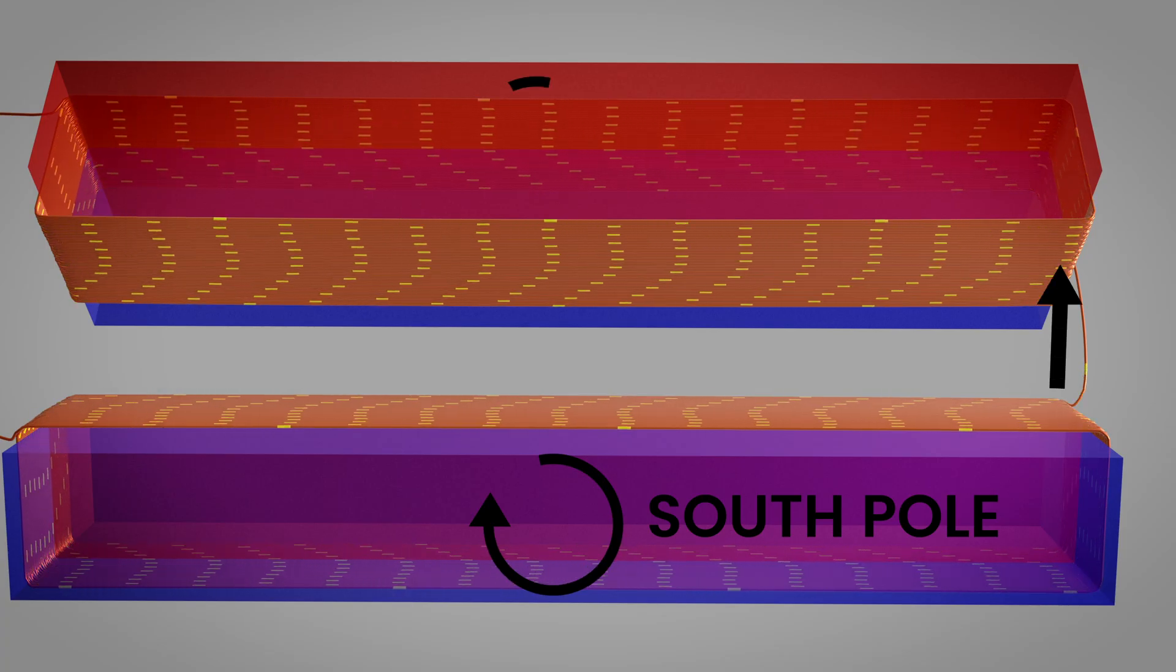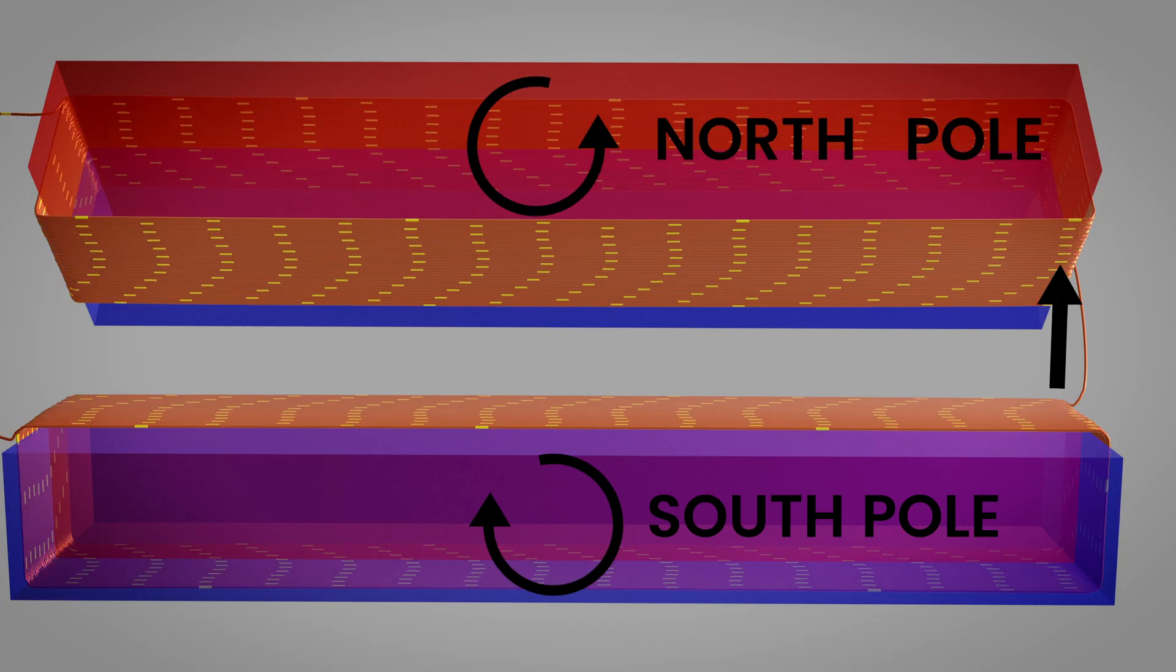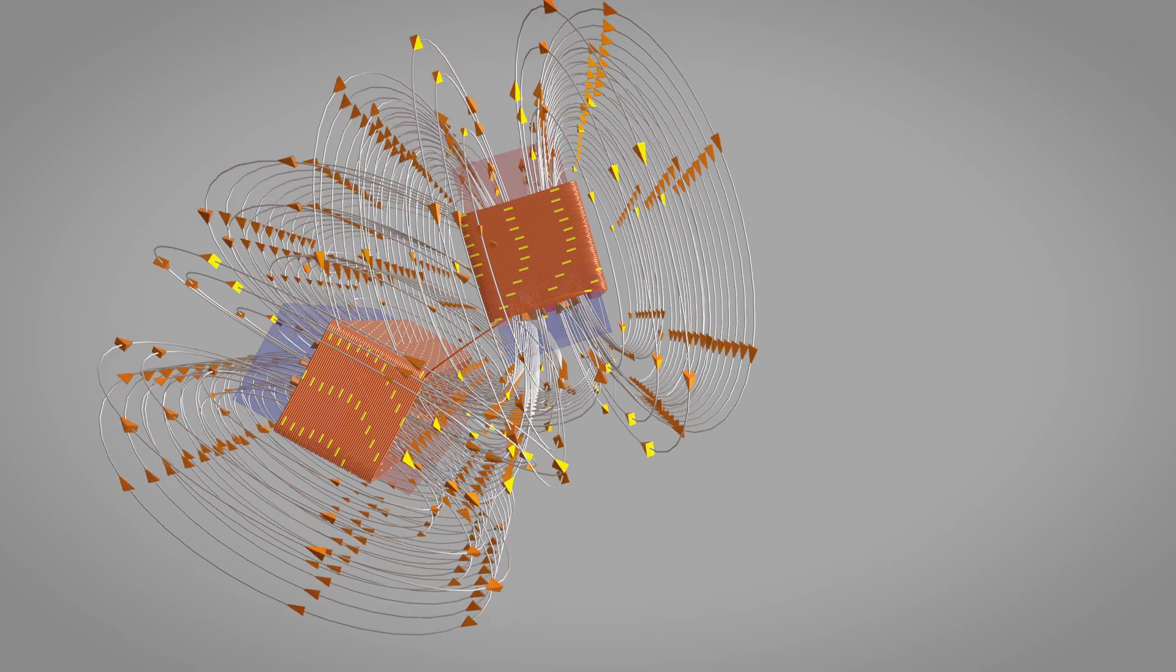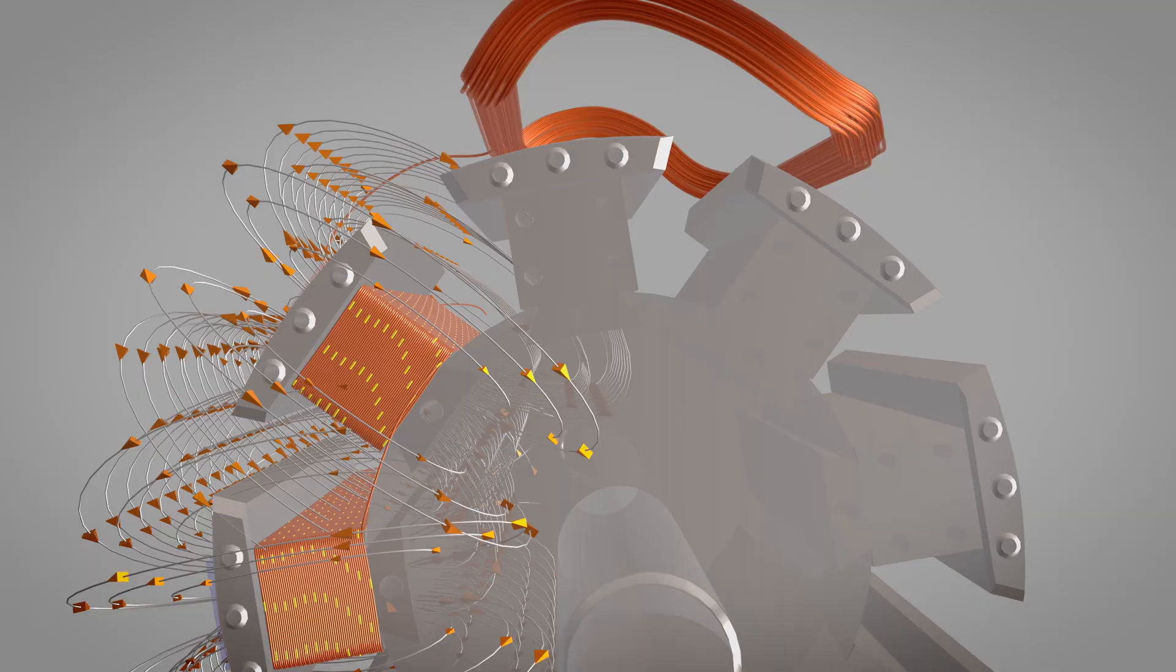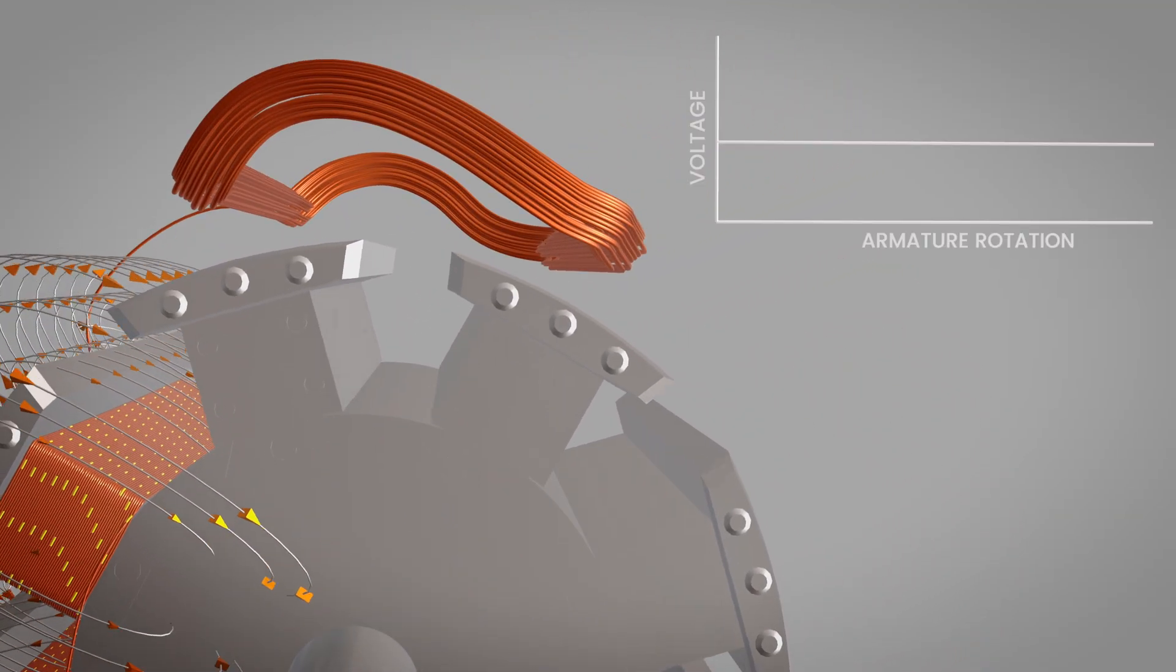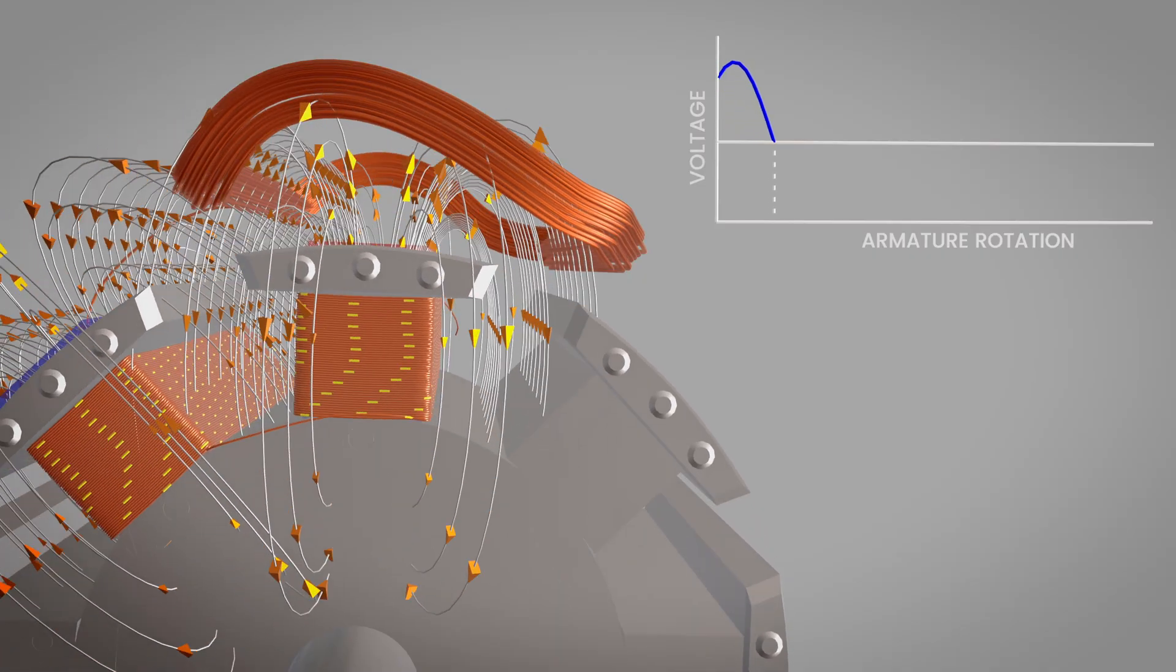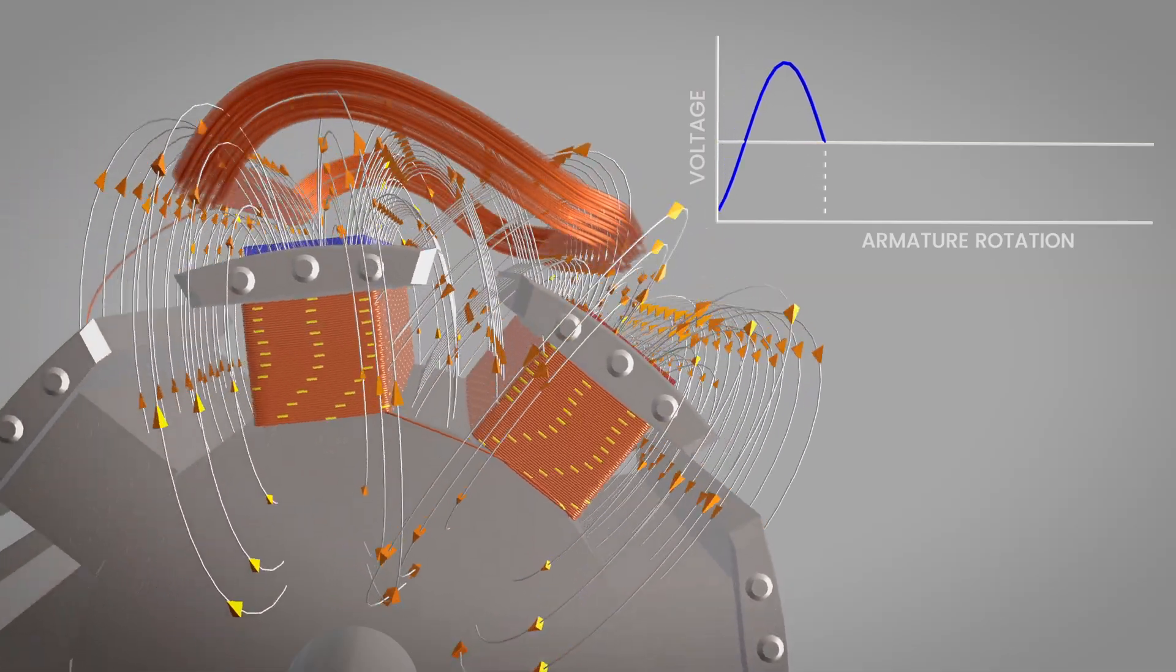The current then continues to the second pole, where it flows counterclockwise, creating a north pole. This series connection of field windings is essential. It ensures that adjacent poles always have opposite polarity. As our two-pole rotor spins, the single stator coil experiences alternating magnetic fields. As the north pole passes our stator coil, induced voltage rises to its positive peak. As the rotor continues and the south pole approaches, voltage decreases, crosses zero, and reaches a negative peak.